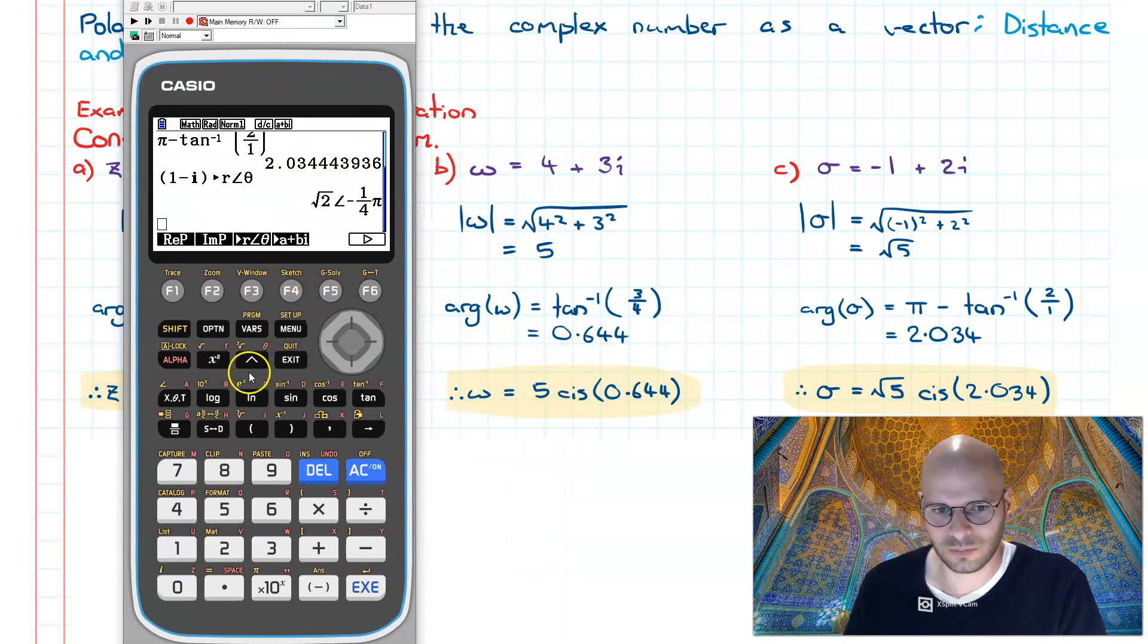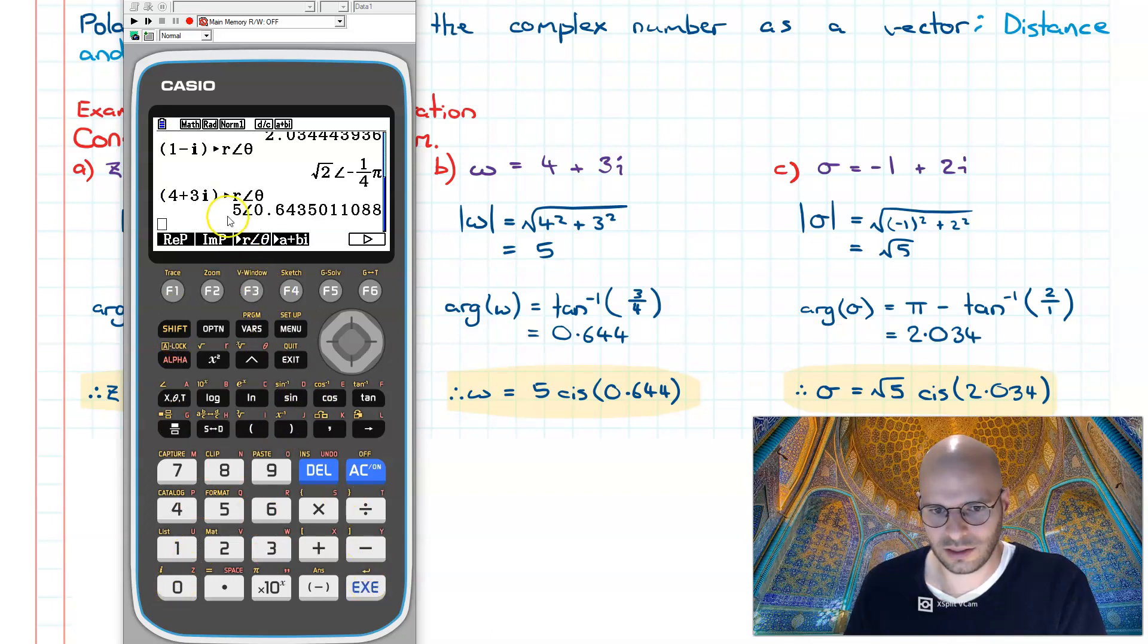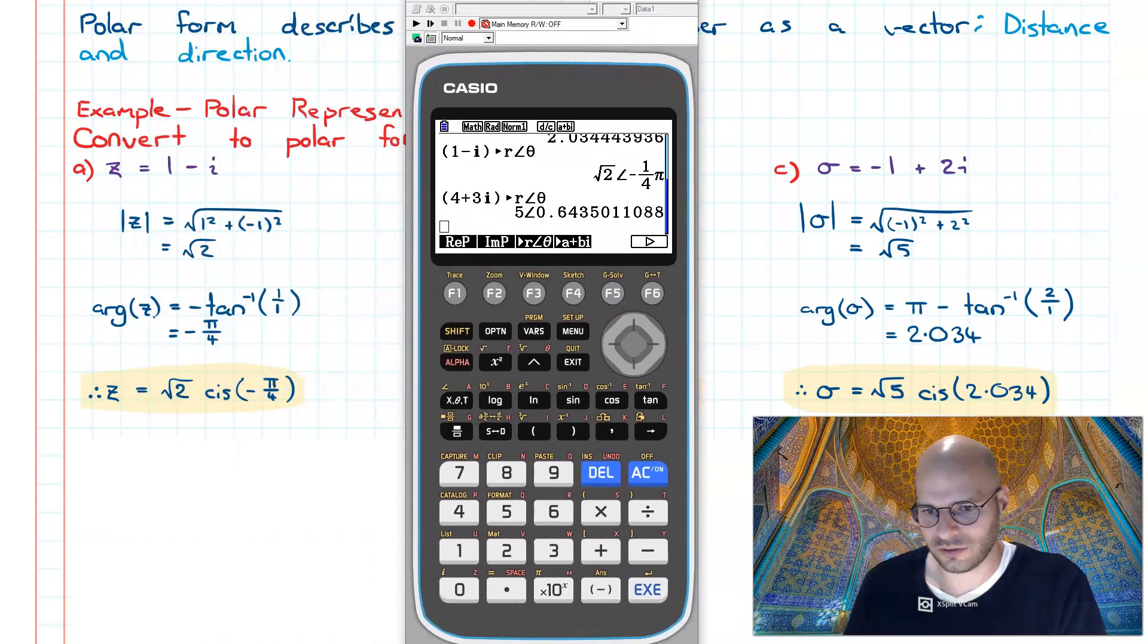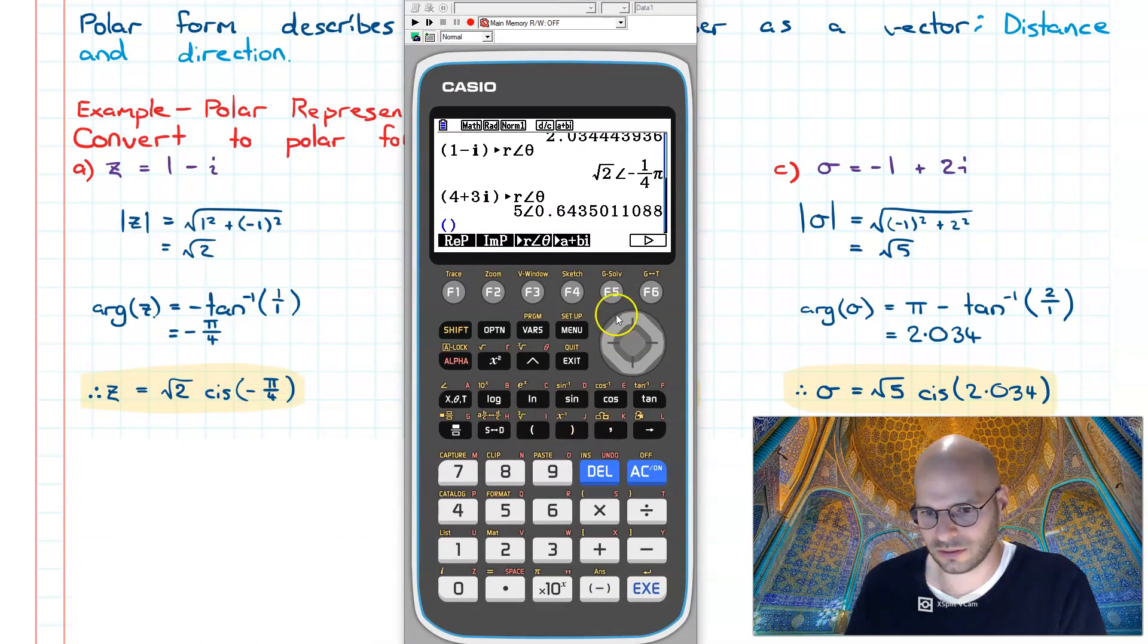Next one across for omega. I key it in and lo and behold, it's as we expected. And to finish this off, I request polar form, and as you can see, it does the conversion with ease.